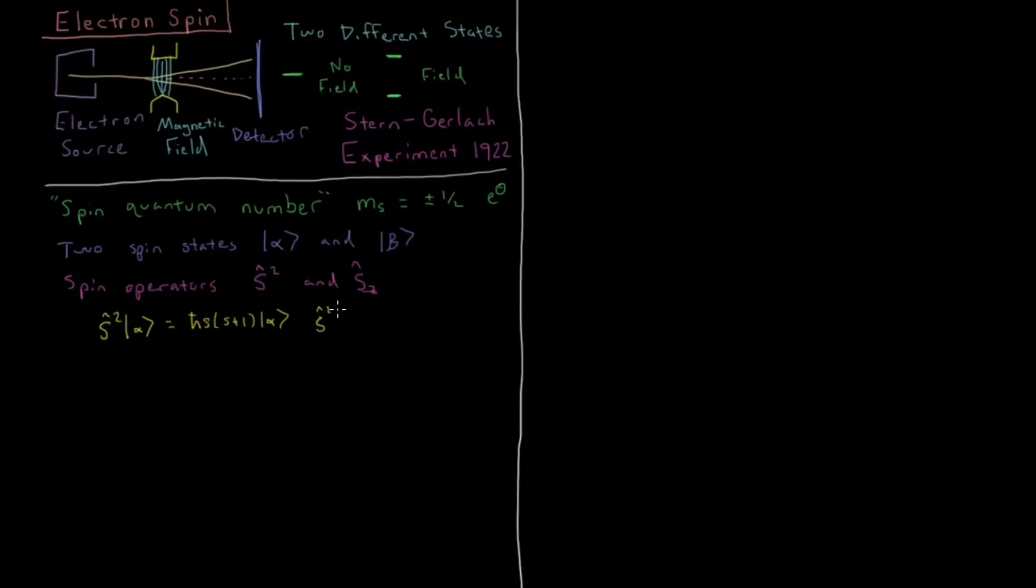Similarly, s squared acting on beta gives us the same value. This is h bar squared, s times s plus one, acting on beta, where s is going to be equal to 1 half.